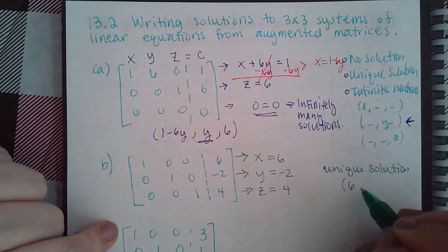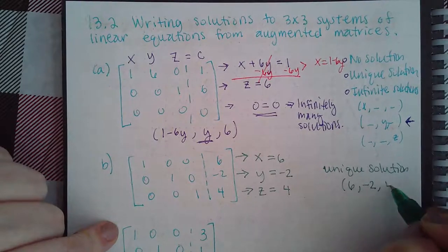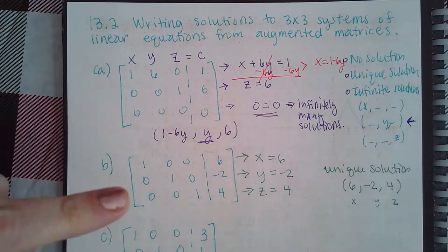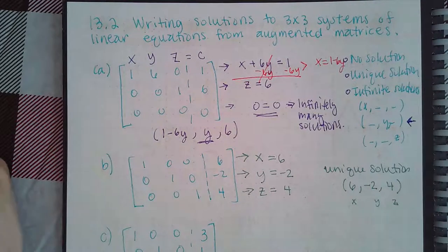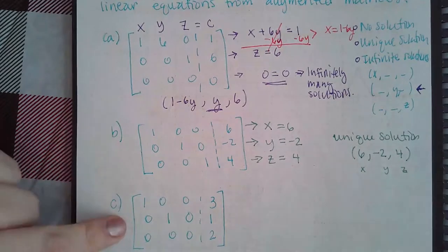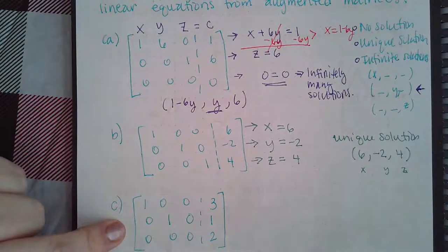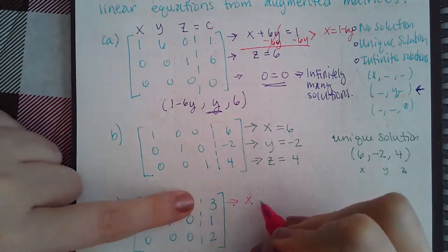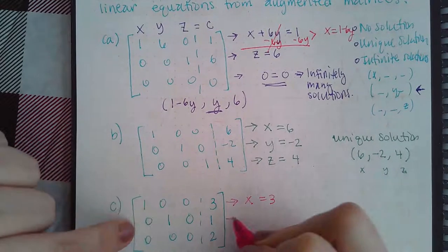It does have to be in that order: the x value first, the y value in the middle, and the z value last. Now the last one, we'll do this one in its equation form. So you have 1x, no y's, no z's equal to 3. You have no x's, 1y, no z's equal to 1.